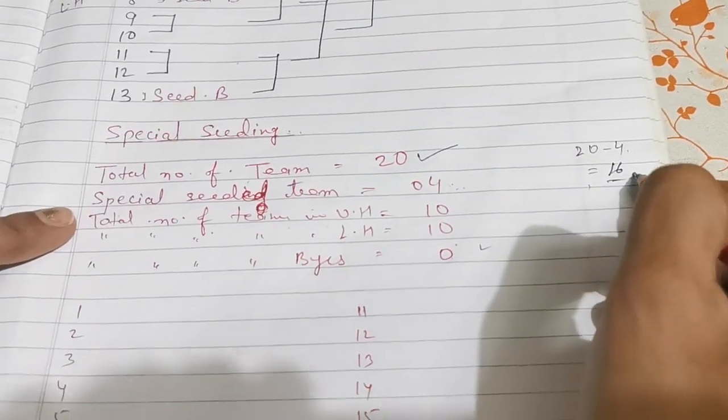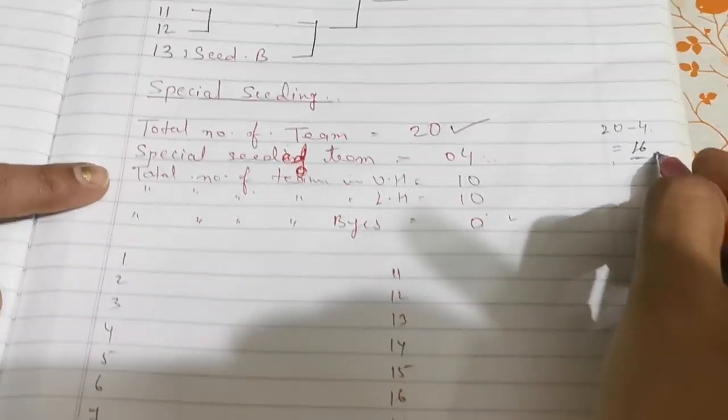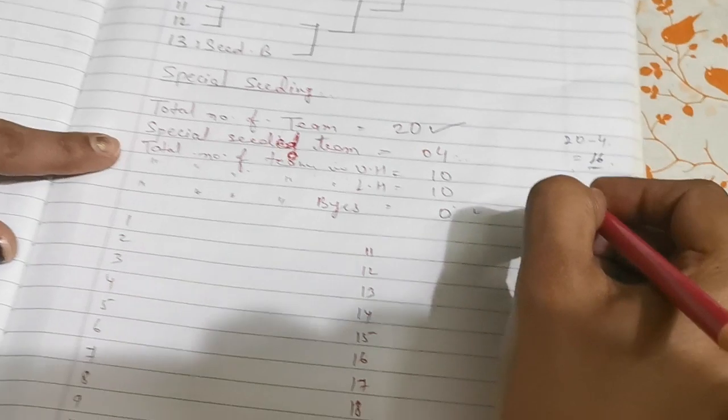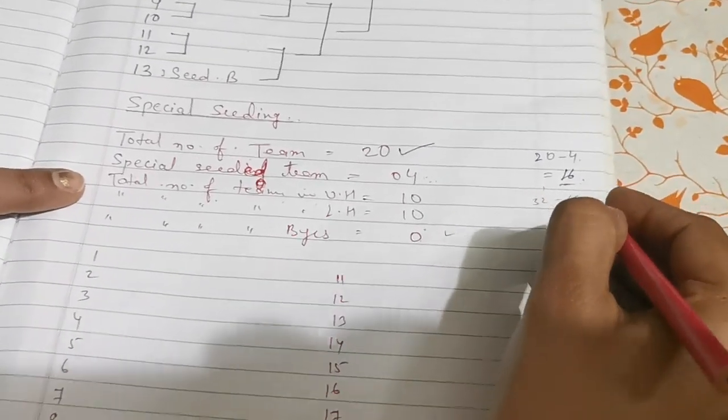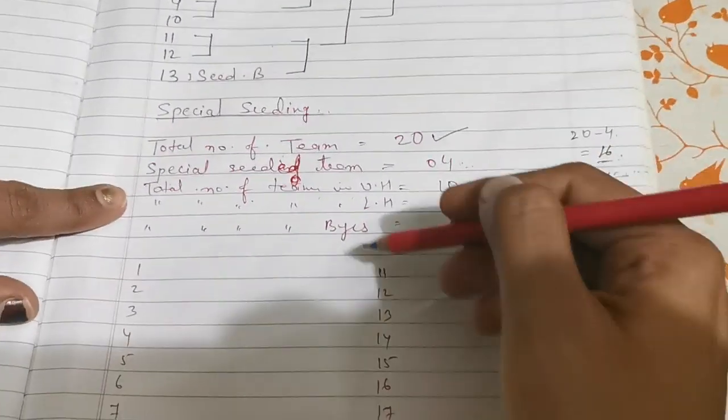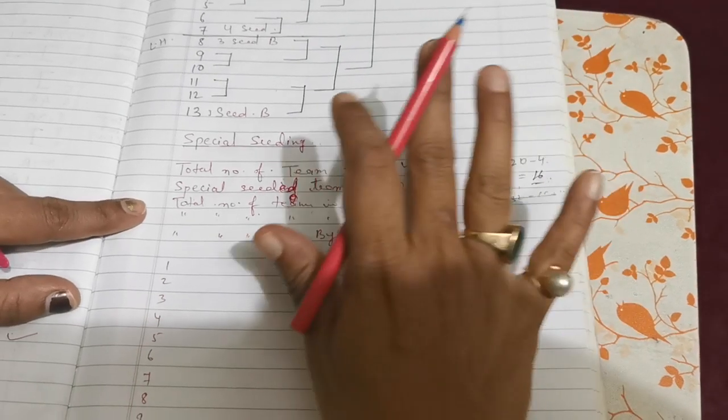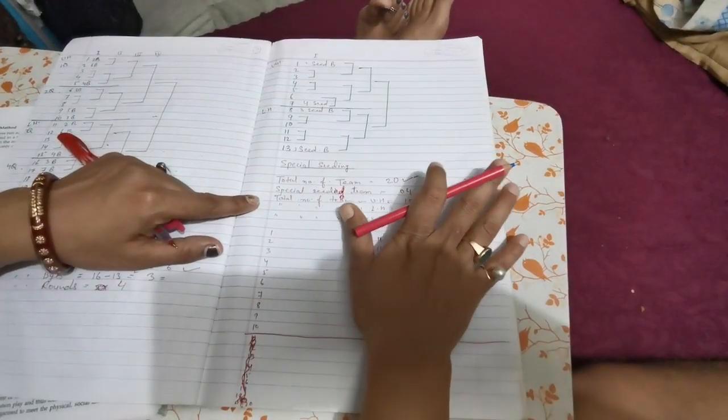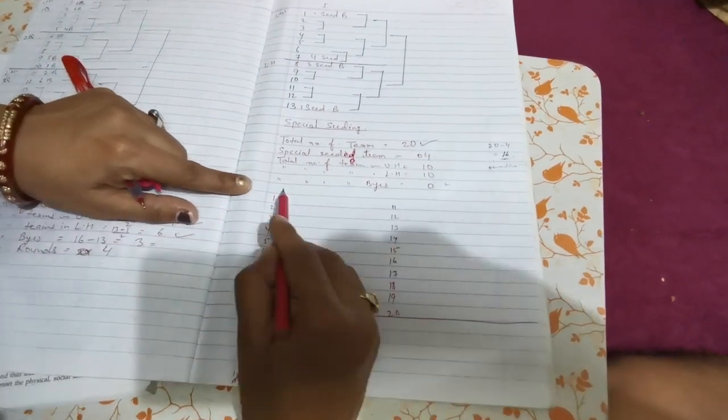Here 16 teams, and when we will go to the power of 2, the next power of 2 of 16 is 32. If you will minus the 16 again, 16 will come. So it means each team will get the bye, that is why there is no need to give the bye.